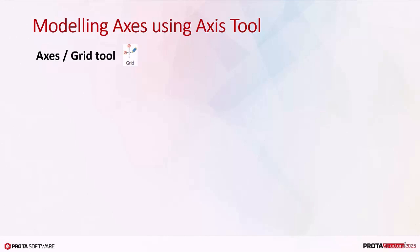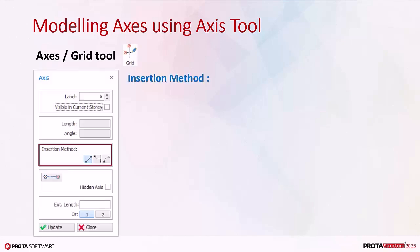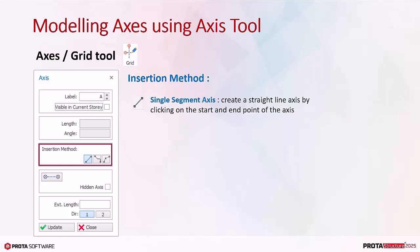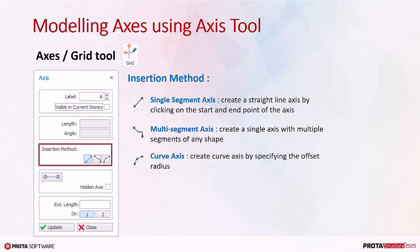When modeling axes using the axis or grid tool, there are three insertion methods. Single segment axis: create a straight line axis by clicking on the start and end point. Multi-segment axis: create a single axis with multiple segments of any shape. Curve axis: create a curve axis by specifying the offset radius.